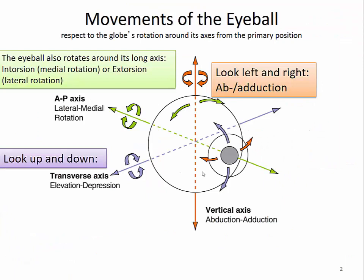The different attachment sites of the muscles enable the eyeball to move in many directions — basically around three axes, into six directions. We can rotate along the anterior-posterior axis with lateral and medial rotation, also called extorsion and intorsion. We can look left and right, which is abduction or adduction, and look up or down, which is elevation and depression.